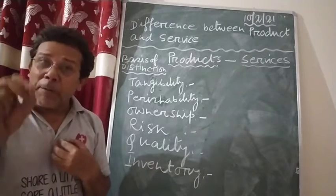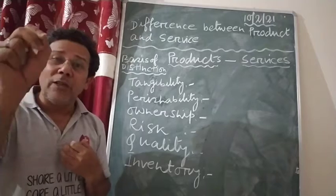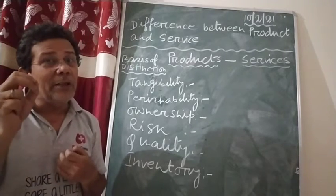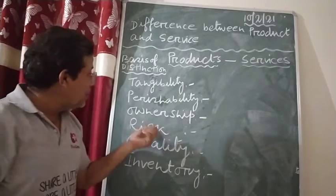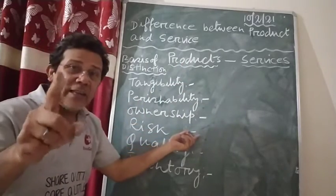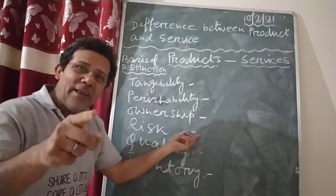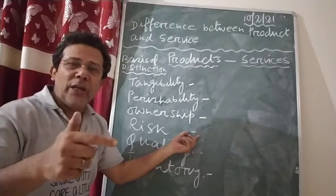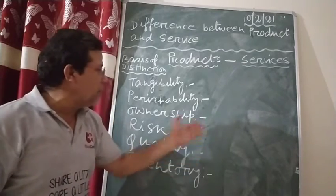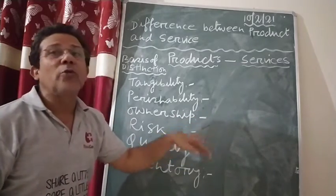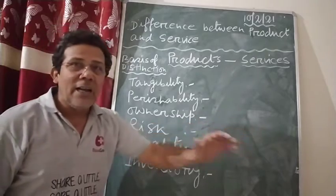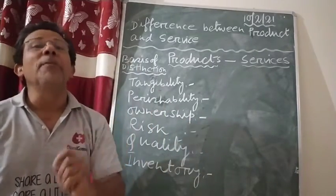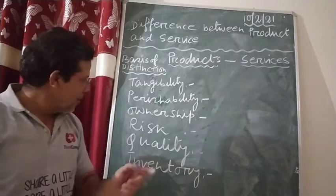On the other hand, service has a lot of risk because once a service is delivered, it cannot be replaced. For that particular incident or situation, you cannot take it back because the feelings will always be there. That is why in product the risk is less — it can be exchanged if there is any deficiency or defect — whereas for service, once delivered, you cannot replace it.